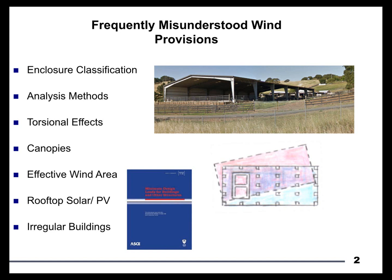After our Q&A we'll do four slightly quicker-hitting topics. We'll talk about torsion as it relates to wind, we'll talk about canopies, we'll do some example problems as they relate to effective wind area, and then we'll touch briefly on rooftop solar or solar PV. Solar PV could and should be an entire two-hour session on its own, so we're really just going to dive into some resources, knowing that half the country this is a really big deal and half aren't dealing with solar at the moment. We'll have our second break and then come back with a Q&A.